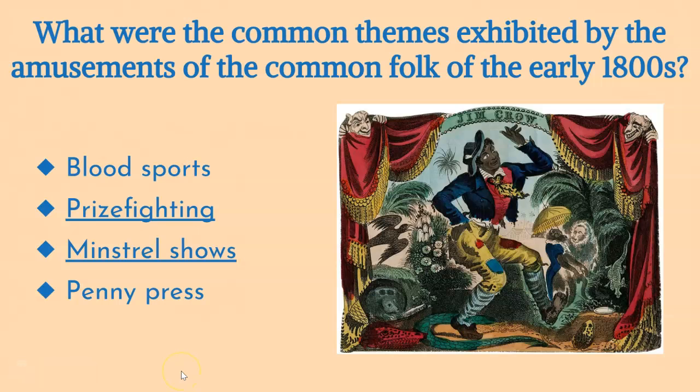The Market Revolution brought profound changes to American society, and along with it, a new commercial popular culture emerged, particularly in cities. This culture flourished primarily in urban working-class neighborhoods, where a vibrant subculture of young working men developed in stark contrast to the piety and moral strictness of the middle class. A defining feature of this subculture was its emphasis on drinking and manliness, which was often measured by physical prowess. Saloons became a focal point for socializing, and many of the amusements of the common folk revolved around what were known as blood sports. Activities like cockfighting, ratting, and dogfighting, often held in saloons, became popular forms of entertainment, despite frequently being illegal.